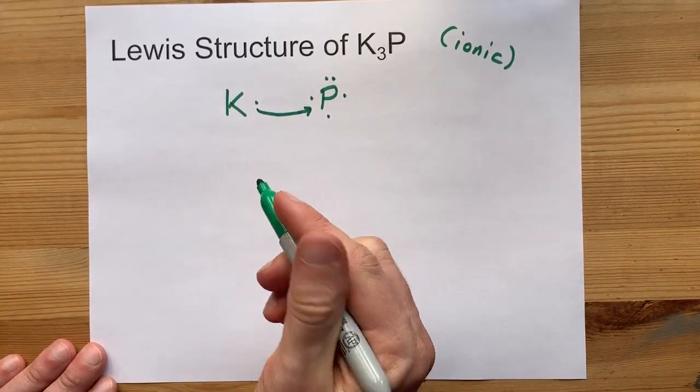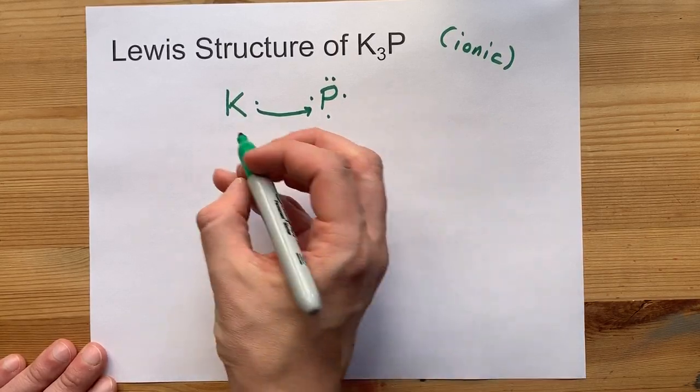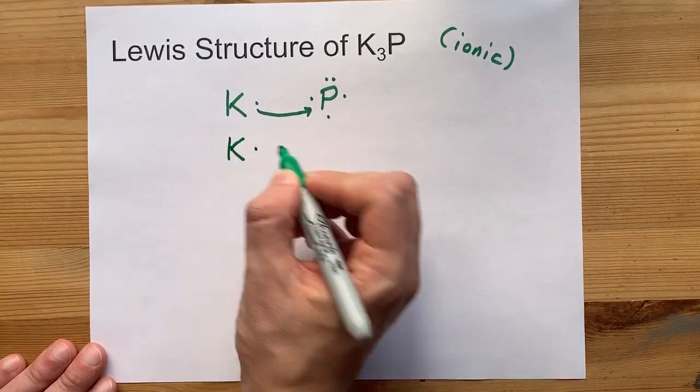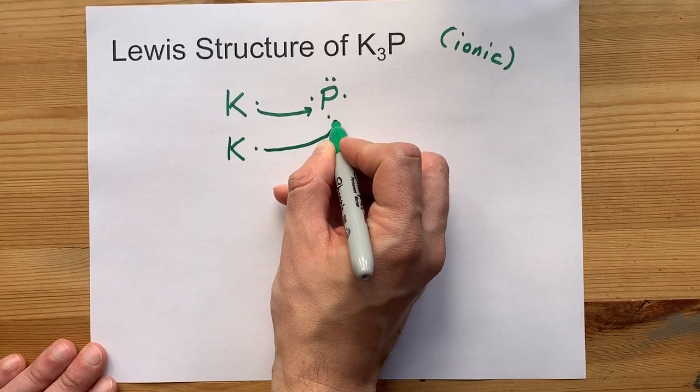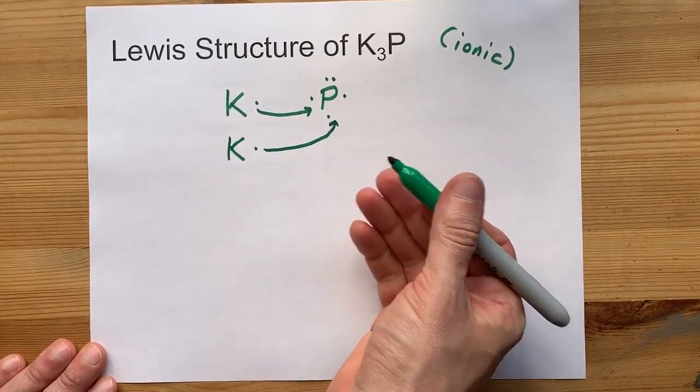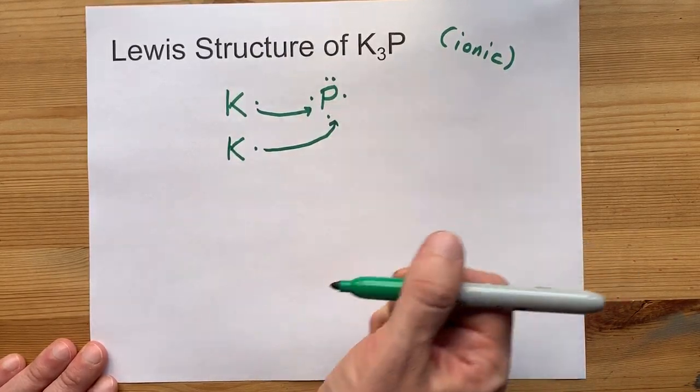Getting closer, where is it going to get another two? Well if we build in another potassium we can give it a seventh. That's cool but it's still not a full octet of eight.